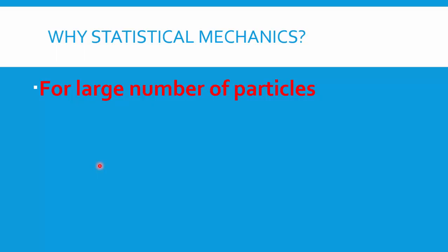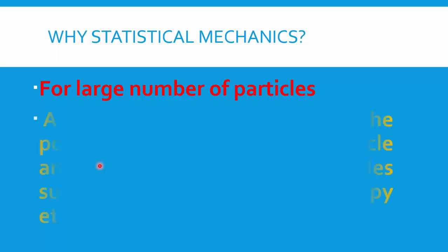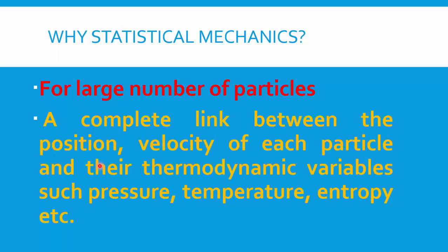Statistical mechanics tries to determine the position, velocity, and acceleration for all the particles. It can also form a link between thermodynamic quantities — such as pressure, temperature, and entropy — for all the particles in the system, with their position, velocity, and other parameters.